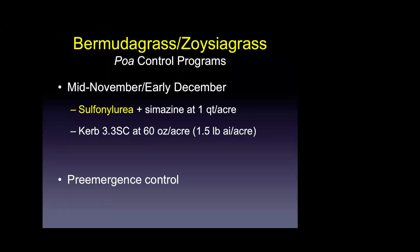For controlling Poa annua in bermudagrass and zoysiagrass, sulfonylurea herbicides applied with simazine is a great program. Many more sulfonylureas are safe in these two turf species — products like Revolver, Monument, Katana, Tribute Total — but having that second mode of action with simazine can make a big difference in success. Curb again in non-residential sites at 1.5 pounds active ingredient per acre, and pre-emergent control in the fall, sets you up for success controlling Poa in those lawns.